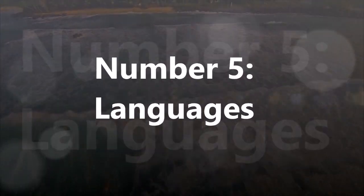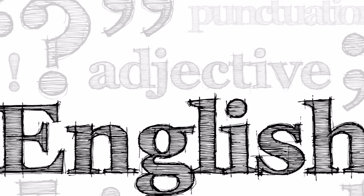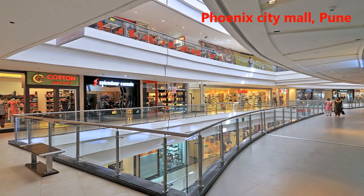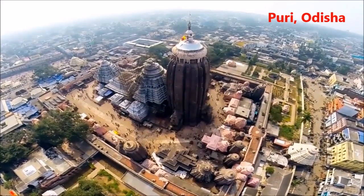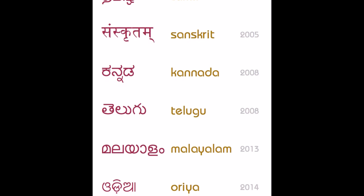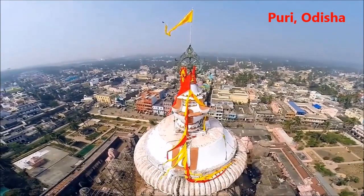Number 5: Languages. Marathi, Gujarati, and Konkani are the most widely spoken languages in the West. Hindi and English are also understood by a lot of people, especially in urban areas. Bengali is the most understood language in India after Hindi and English. You can look at the other important languages in East India on the screen. In 2004, the Government of India decided to grant classical status to 6 Indian languages. East has one classical language, Odia. West has none.